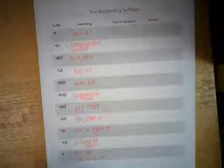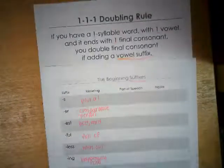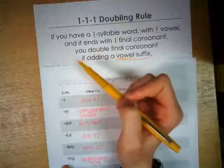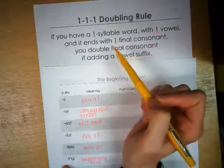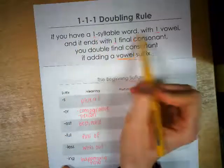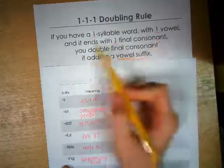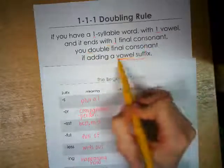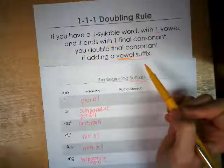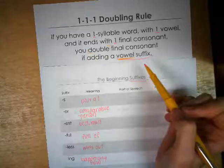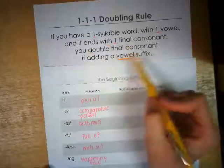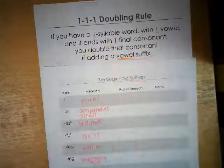Those are just some basic suffixes that students will see as we work on them. This week we are going to work on the doubling rule. If we're given a base word, we follow the doubling rule to know if we're going to double that final consonant. If you have a one-syllable word with one vowel that ends with one final consonant, then you're going to double that final consonant if adding a vowel suffix. If it's a consonant suffix, don't worry, be happy — we don't have to think about doubling. But if it is a vowel suffix, we might have to double that final consonant.